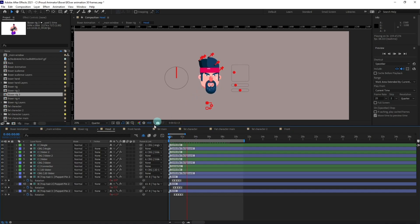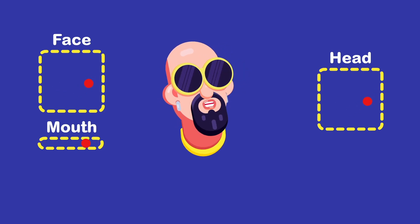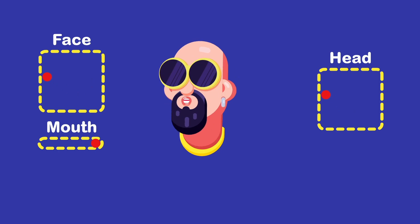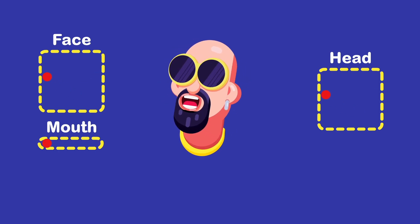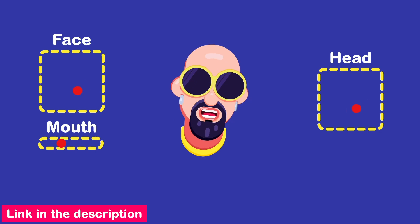To animate the head of this character, I have rigged the whole face with Duik Bassel using Duik connectors. If you want to learn in full detail how to rig the face of a character, check out my lesson — I have explained in full detail how to rig the face of a character with Duik Bassel and Duik connectors. You will find the link in the description or on the info button in the top right corner.